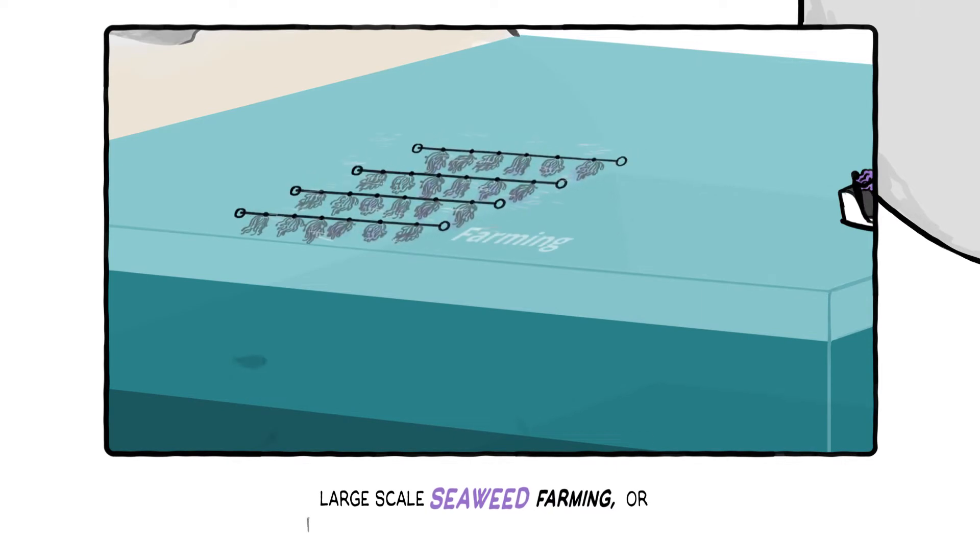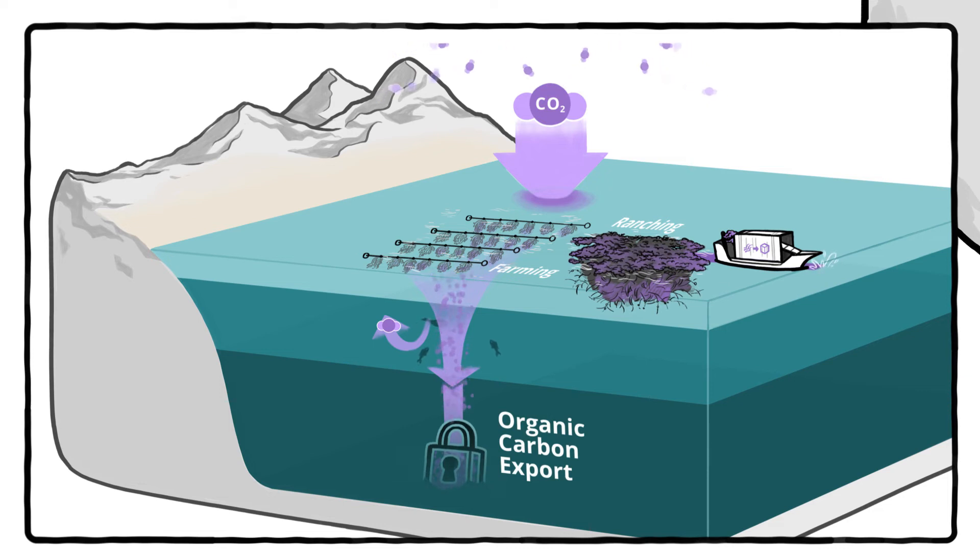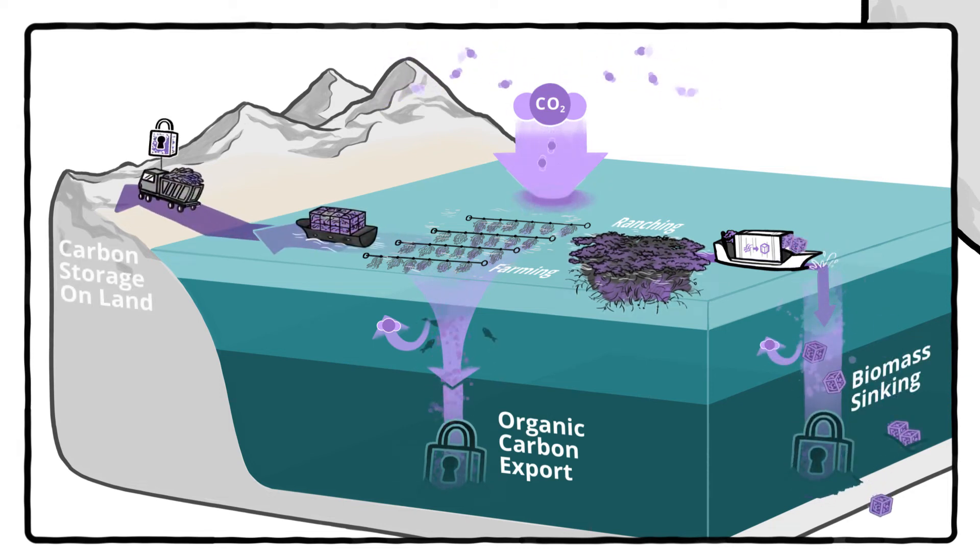For example, large-scale seaweed farming or ranching of free-floating sargassum can remove the carbon stored in plant biomass by sinking it to the ocean floor or by locking it up in long-lived bioproducts.